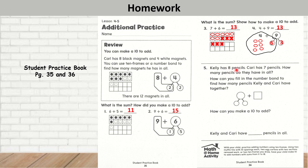Question number 5: Kelly has 8 pencils. Kari has 7 pencils. How many pencils do they have in all? In all means we have to add. So let's fill in the number bonds. Here we have 8 plus 7. I'm going to count up to 10 from 7: 7, 8, 9, 10 — I need 3 more. If you did 8 fingers and took away 3, you will know that the remainder is 5. So 5 plus 3 is 8. Now you have made a 10. 7 plus 3 is 10, plus 5 more is 15.